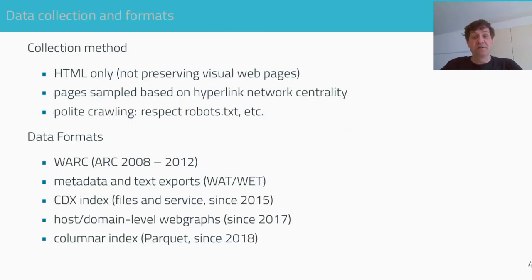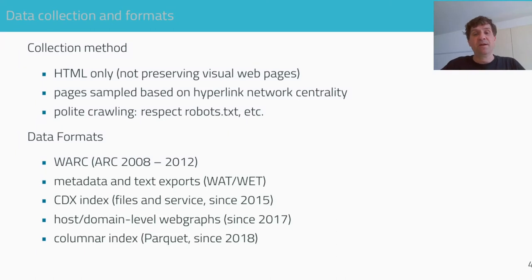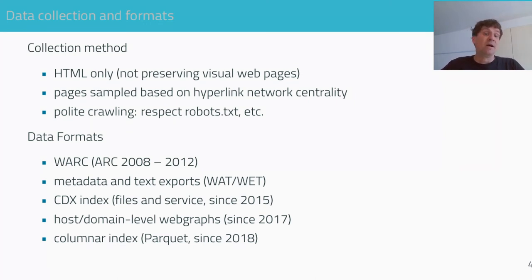Before we look at data usage, let's quickly introduce the data itself. We crawl and store only HTML pages, not preserving the visual page. Pages are sampled based on hyperlinked network centrality. The crawler behaves very politely and respects robots.txt etc. The data is stored primarily as WARC files, but we also provide metadata and text exports, a CDX index both as files and as a service, host and domain-level web graphs, and a columnar index which integrates well with big data cloud services.